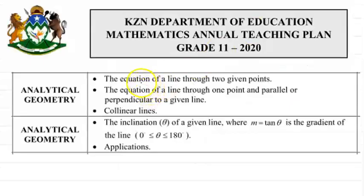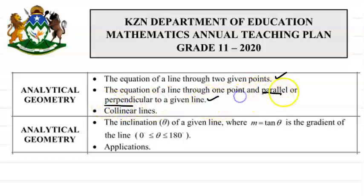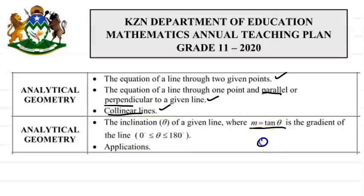The work schedule requires us to find the equation of a line through two given points — so we need the straight line equation y = mx + c, or y − y₁ = m(x − x₁). We also need to know parallel and perpendicular line relationships: parallel lines have equal gradients; if two lines are perpendicular, the product of their gradients equals −1. Collinear points lie on the same line, meaning the gradient between any two of those points is the same. The angle of inclination uses m = tan(θ), so θ = tan⁻¹(m).